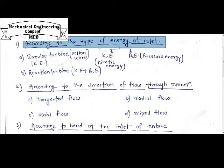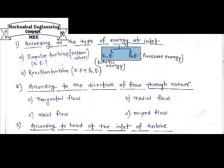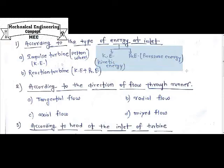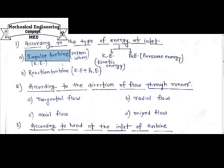So what kind of energy is basically entering into the turbine? There are two basic types. The first one is kinetic energy and the second one is pressure energy, or a combination of kinetic and pressure energy. One basic type of turbine is the impulse turbine, in which the inlet energy is kinetic energy.